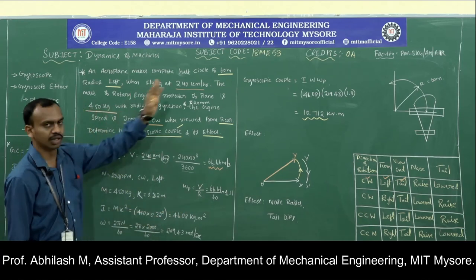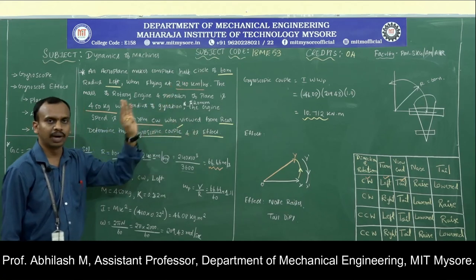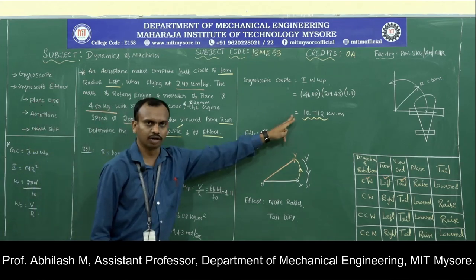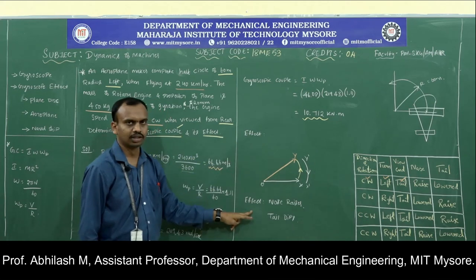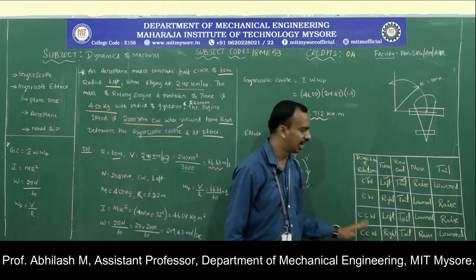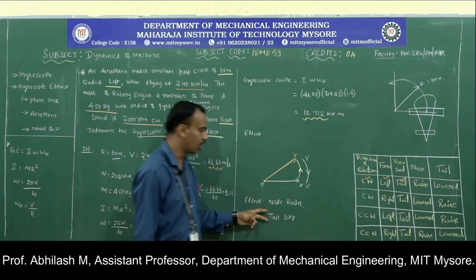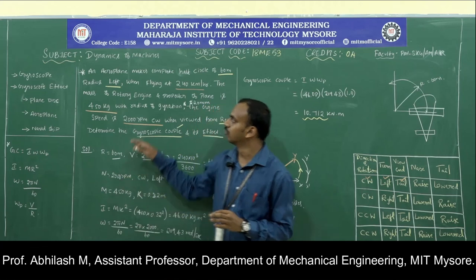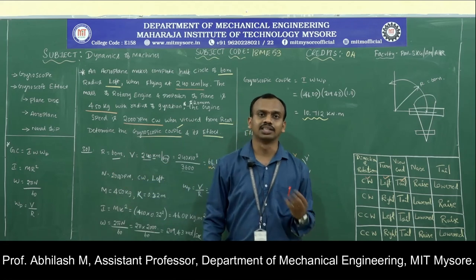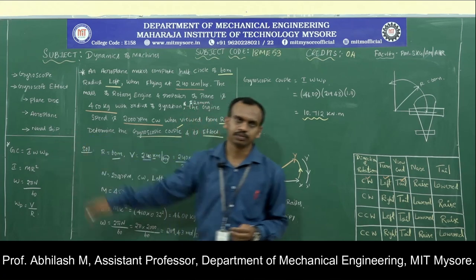In the examination, parameters such as speed, direction of rotation, velocity, or the viewing end may be changed. Depending on the given conditions, calculate the gyroscopic couple using C = Iωωp and determine the effect using the conditions table. In this session we have covered the gyroscopic effect on the aeroplane. In the next session we will begin with the gyroscopic effect on the naval ship. Thank you.